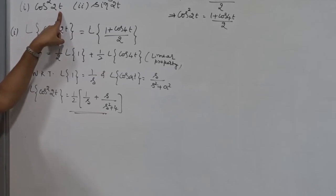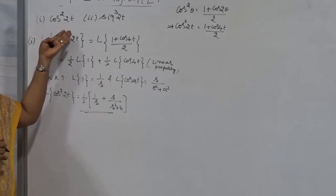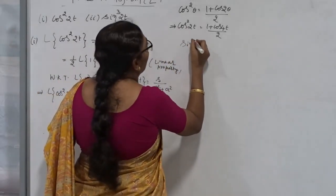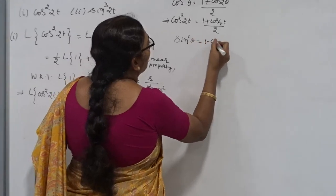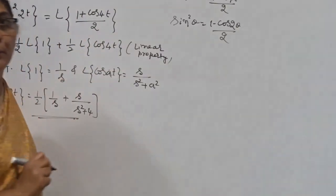So, suppose it's having a squaring of the trigonometry function, similarly try for sine square 3t like that. Sine square can be written as, you already know that, sine square theta can be written as 1 minus cos2theta divided by 2. Using this formula you proceed with it.